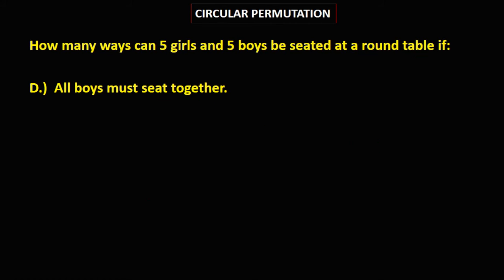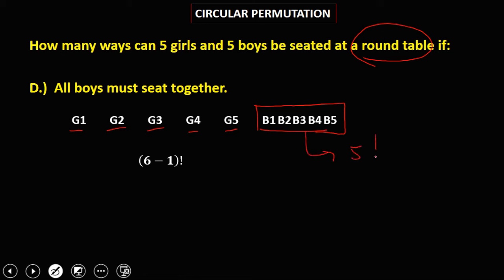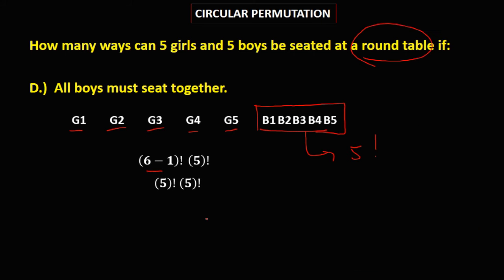For this problem, all boys must sit together. Treating the 5 boys as one unit gives us 6 entities at the round table. The formula is (6 minus 1) factorial times 5 factorial, since we can rearrange the 5 boys among themselves. That's 5 factorial times 5 factorial, which equals 14,400 ways.